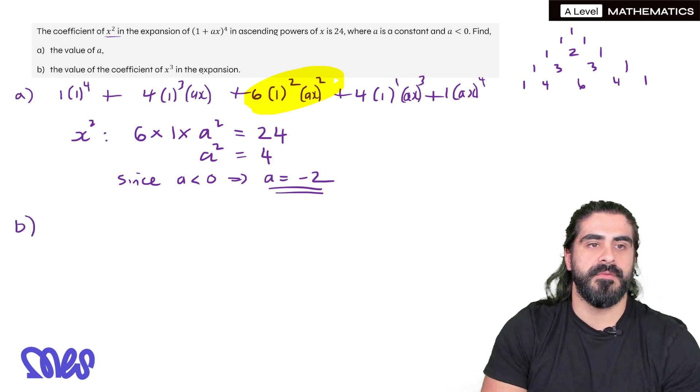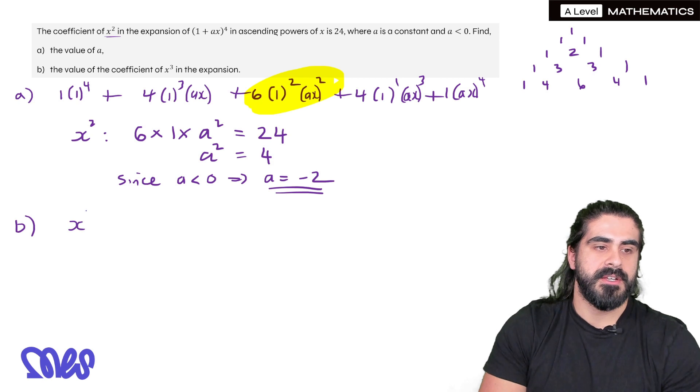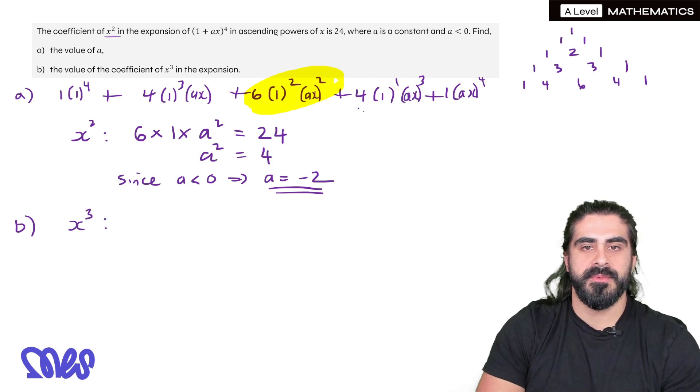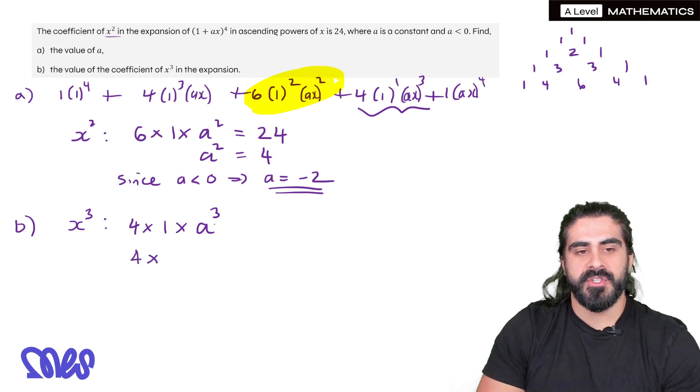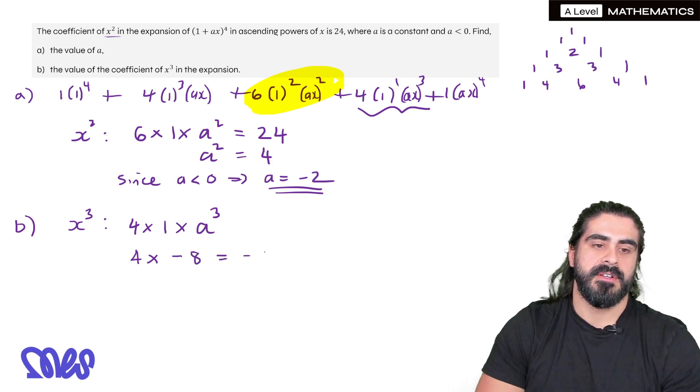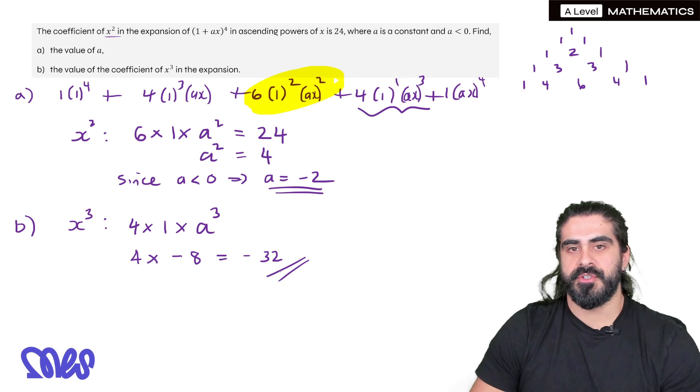Finally then part b, find the value of the coefficient of x³. So when you read the coefficient of x³ over here you have 4 times 1 times a³x³. But remember we don't need to write the x³. So we're doing 4 times 1 times (-2)³. -2³ is -8, so that makes -32, and that's our solution.